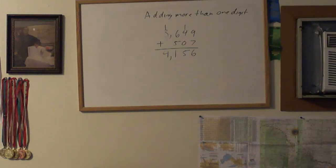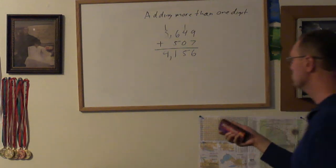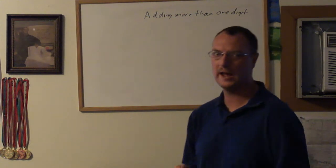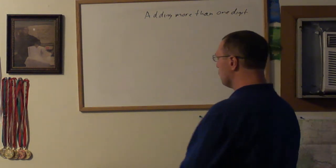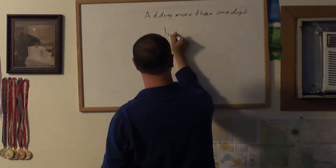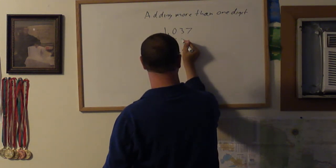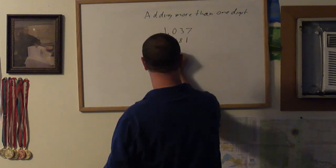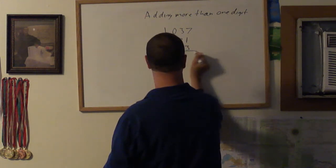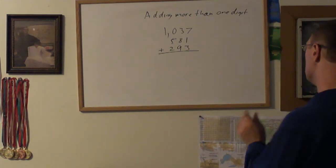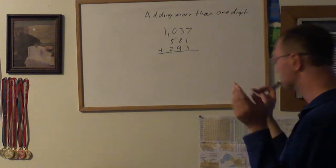Alright, that is the answer to the addition problem. Now let's skip a little more and add another number: 1,037, 581, and 293. Let's add the three numbers up.